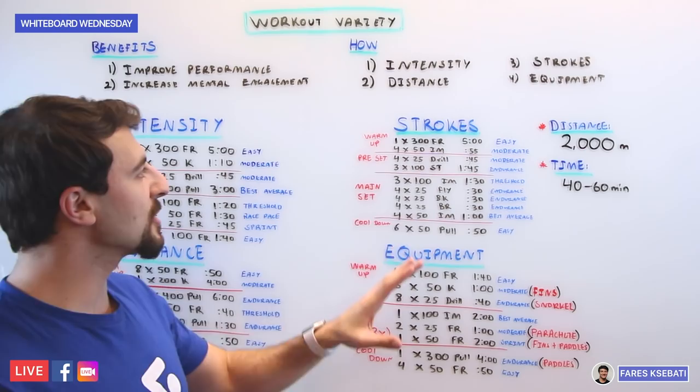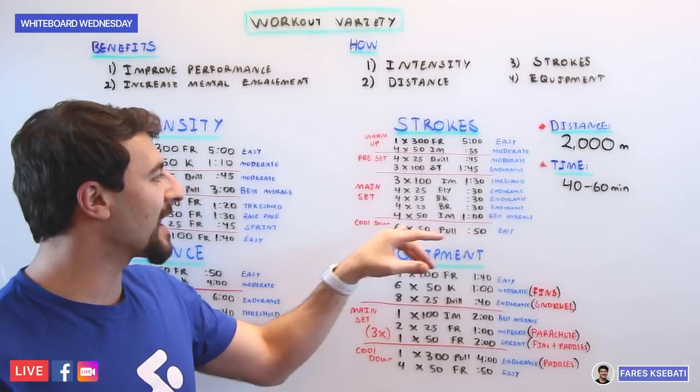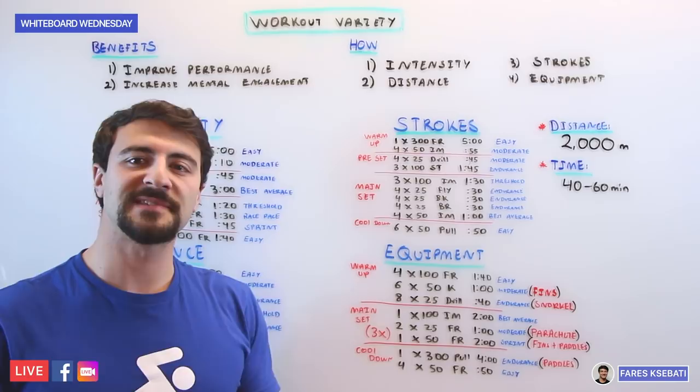So if you look at the stroke variety workout, there's a lot of different things going on. You're doing freestyle, you're doing IM, you're doing freestyle, you're doing pull, you're doing butterfly, backstroke, breaststroke sets, you're doing IM at best average. And I love varying by stroke and individual medley because it really engages the most musculature and the most energy systems all at the same time, plus it keeps things really interesting.